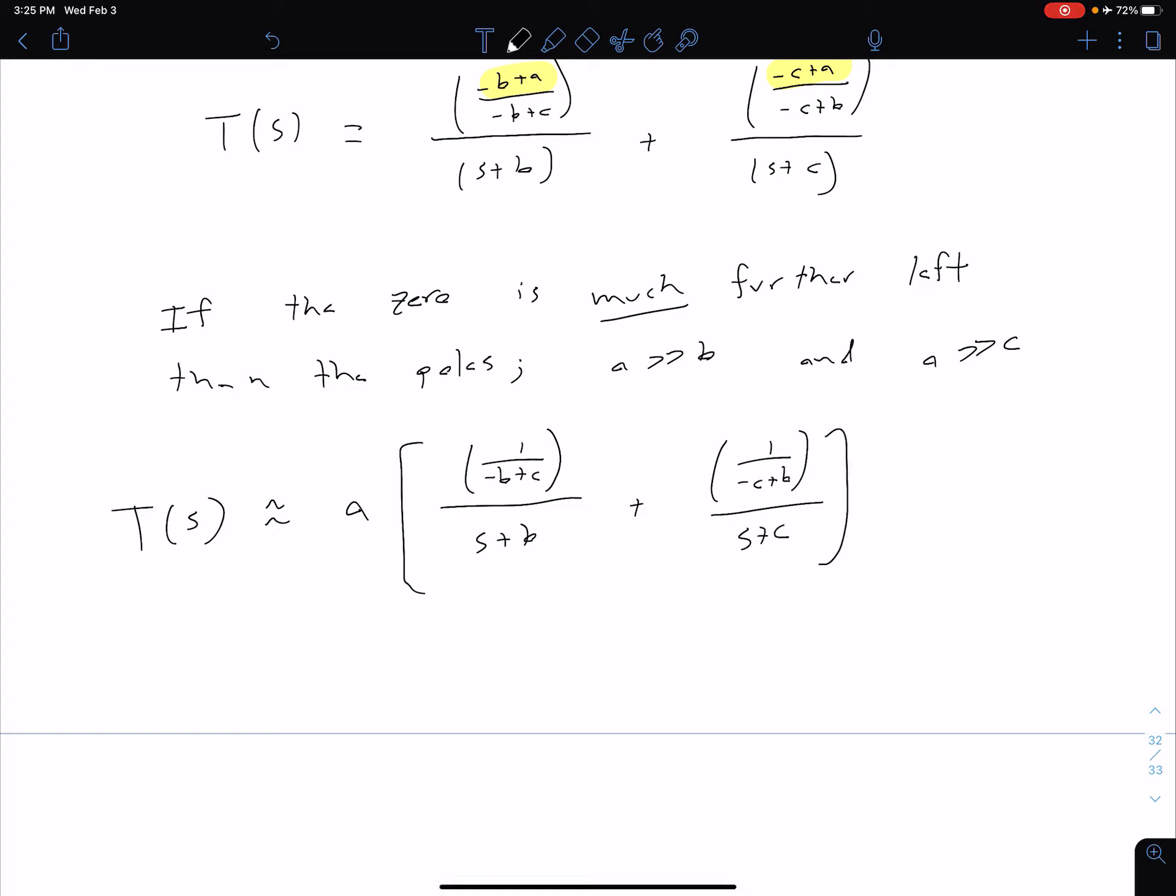Now, through some algebra, what we can show is that adding these two terms in the square brackets, we basically get a 1 in the numerator, and in the denominator, we just have the product of those two denominators. So we have s plus B times s plus C. And as I said, our numerator term goes to 1, you can show that with the algebra, so we're left with just an A here.